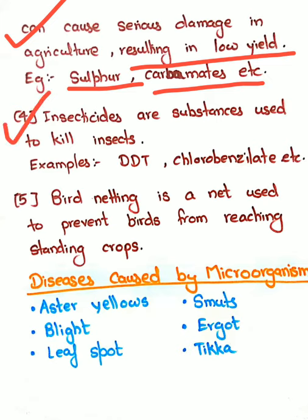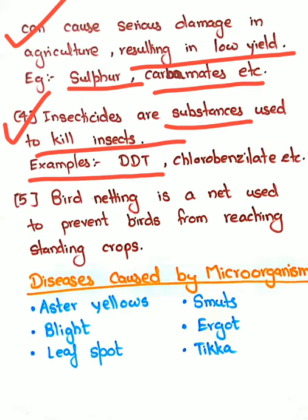Next is Insecticides. Insecticides are chemical substances used to kill insects. Insecticides are generally used in our homes as well. They are used in the form of DDT, chlorobenzilate, etc. DDT is an important insecticide which is used in every field.